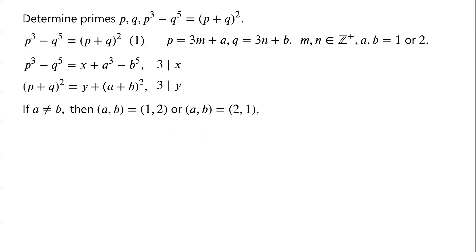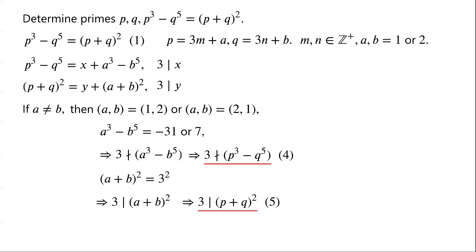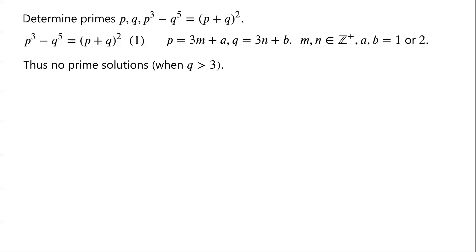If a does not equal b, there are two possibilities: a equals 1 and b equals 2, or a equals 2 and b equals 1. Then a cubed minus b to the power of 5 equals negative 31 when a equals 1 and b equals 2, or 7 when a equals 2 and b equals 1. As 3 does not divide negative 31 and 3 does not divide 7, so 3 does not divide a cubed minus b to the power of 5, implying 3 does not divide p cubed minus q to the power of 5. So the equation has no solutions when a does not equal b, proving that the equation has no solutions when q is greater than 3.